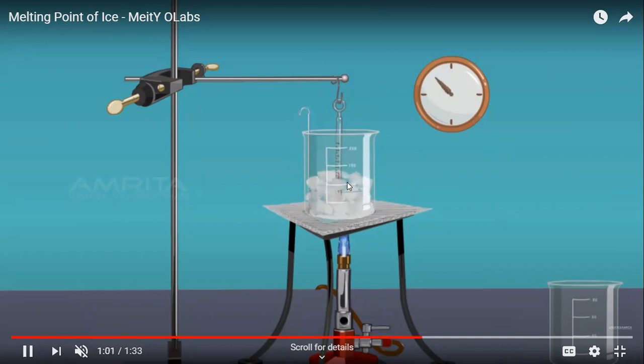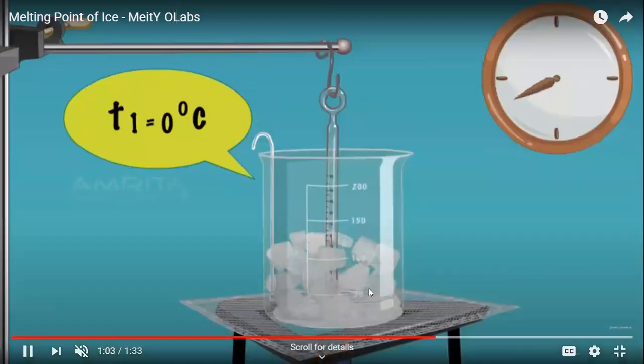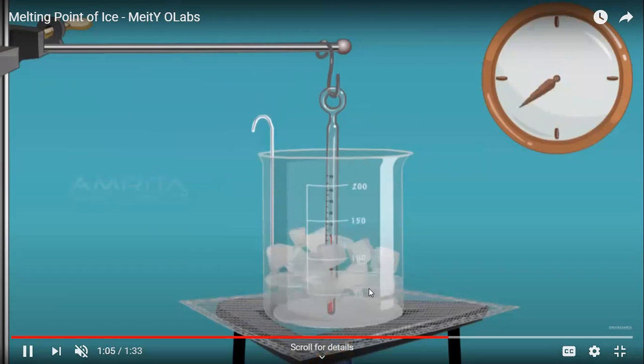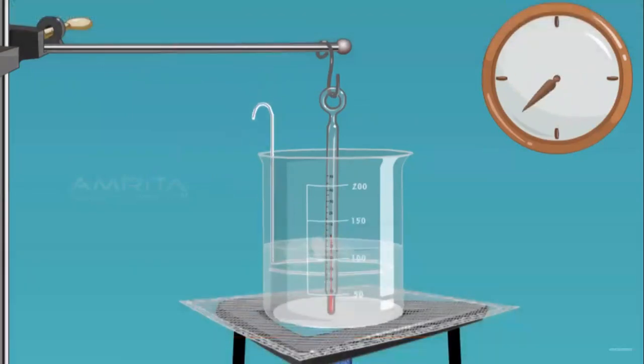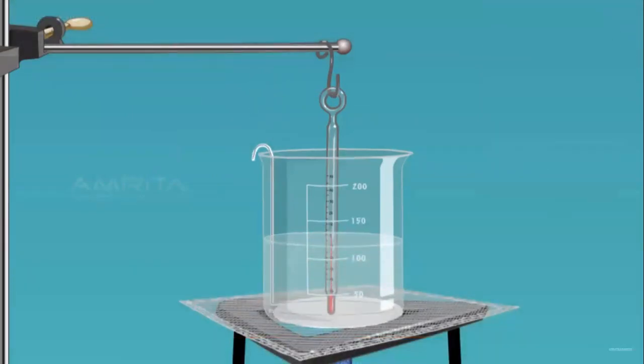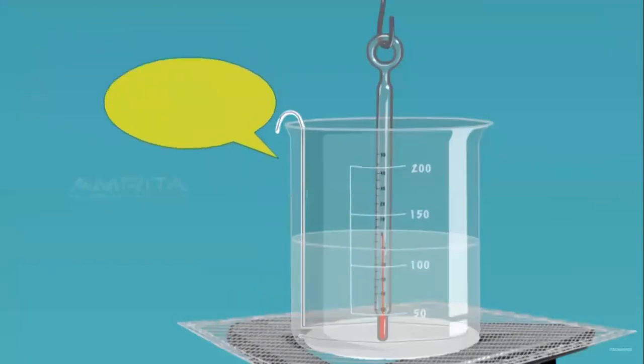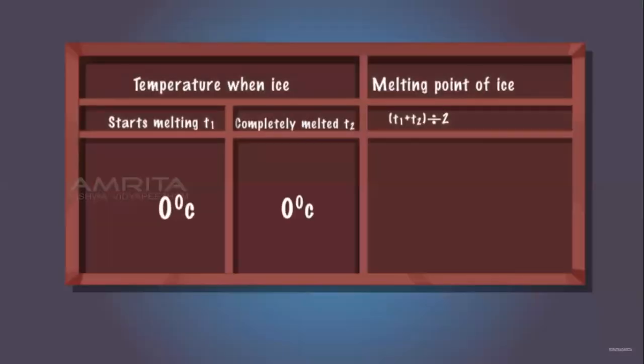With time, we are going to calculate the temperature, T1, 0 degree Celsius. And the stirrer is keep on moving inside the beaker. So you will move the stirrer and T2 again, 0 degree Celsius. So this is the melting point of ice.